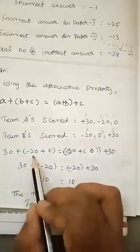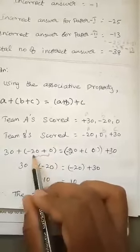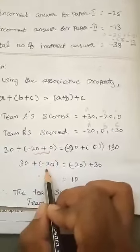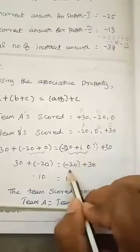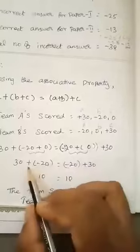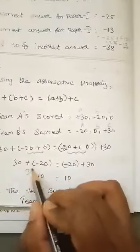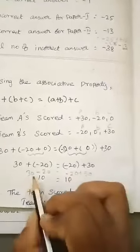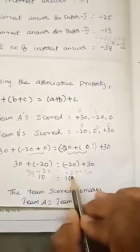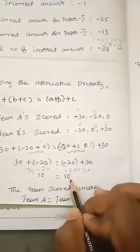30. First of all, we add this in bracket. Minus 20 plus 0 is minus 20. Next, this bracket. Minus 20 plus 0 is minus 20 plus 30. 30 plus into minus is minus 20 is equal to minus 20 plus 30. 30 minus 20 is 10. Minus 20 plus 30 is 10.